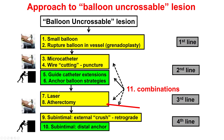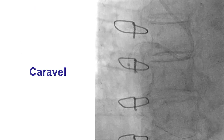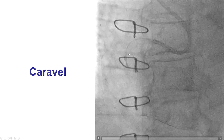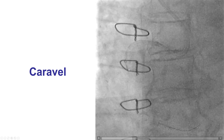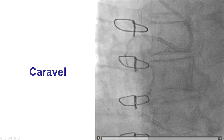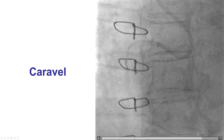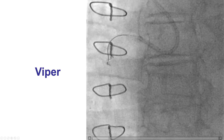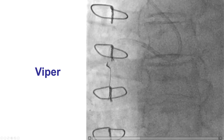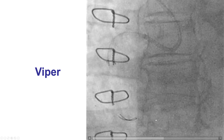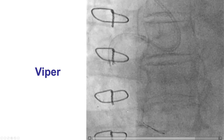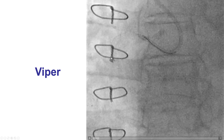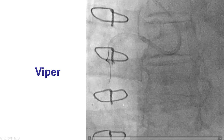We had now gone essentially through the entire algorithm including laser, so the next step was atherectomy. To do atherectomy, we needed to replace the workhorse 0.014-inch wire with the atherectomy wires, which are smaller — 0.009 or 0.012 inch. We advanced a Caravan microcatheter as far as it would go, removed the workhorse wire, and through this wedged microcatheter, were able to advance a Viper wire that went down into the distal true lumen. Although we could not advance the microcatheter through the lesion, by having it wedged as far as possible, we successfully delivered the atherectomy wire.